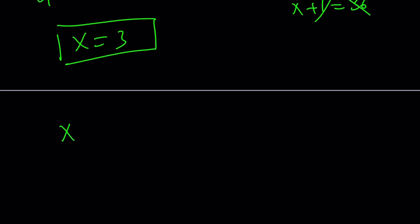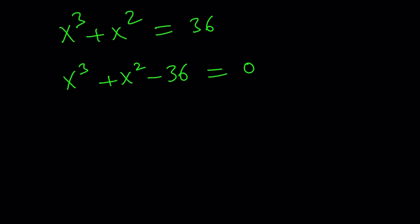You can also arrive at the solution a little differently. Let me show you that approach as well. You can go ahead and put 36 on the left-hand side. And then, like I said earlier, if a solution is an integer, you can try the rational root theorem and look at all the factors.